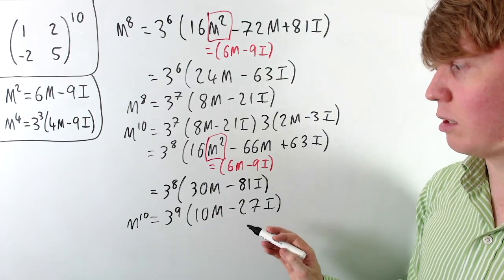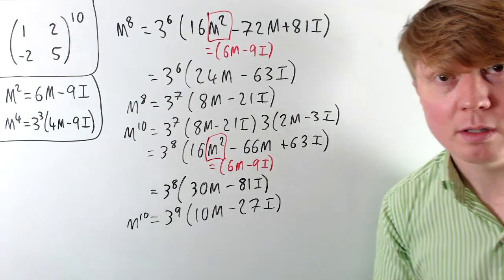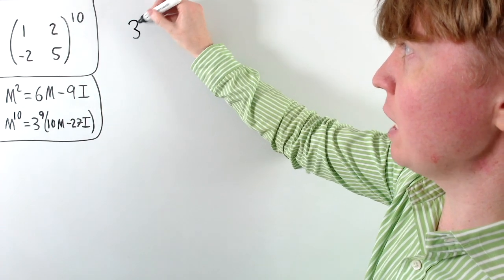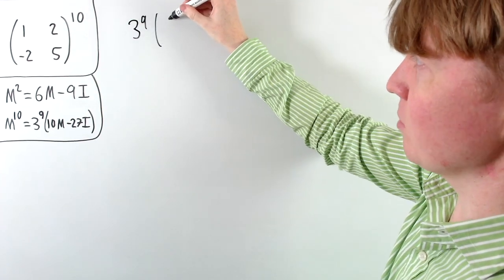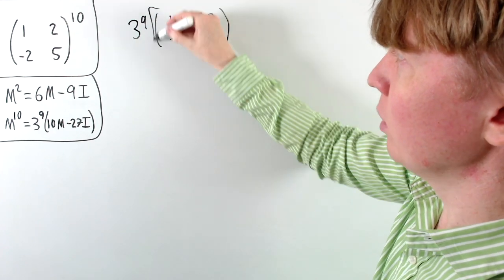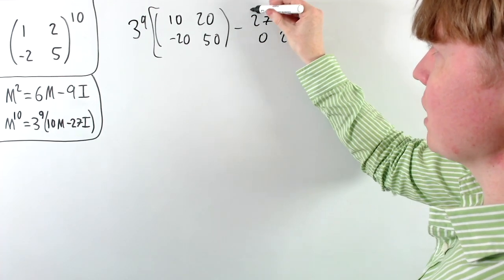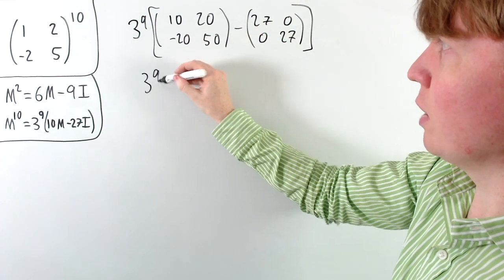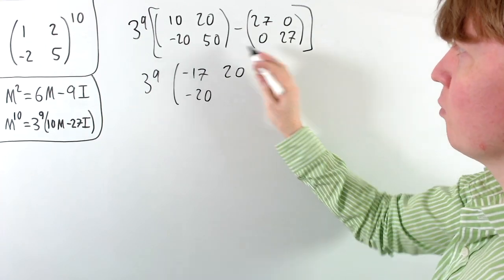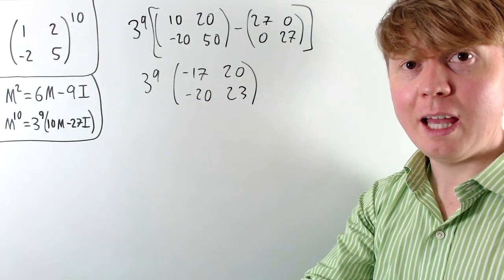We're now ready to calculate the result, which looks much less daunting than multiplying a matrix by itself 10 times. We compute 3 to the 9 times (10M minus 27I): 10 times M gives the matrix with entries 10, 20, -20, 50. Subtracting 27 times the identity gives 27, 0, 0, 27. So we get 3 to the 9 times the matrix with entries -17, 20, -20, 23. This is a satisfactory answer for M to the power of 10.